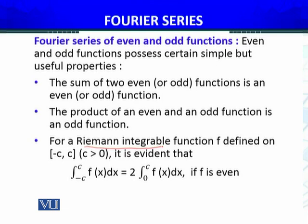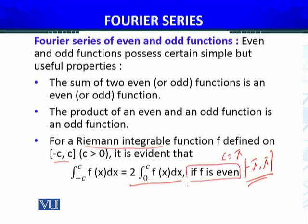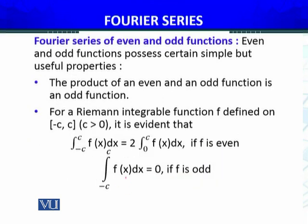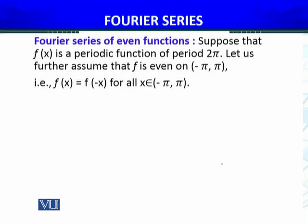For a Riemann integrable function f defined on minus c to c (c greater than zero) — in our Fourier series case, c equals pi, so the interval is minus pi to pi — the integral from minus c to c of f(x) dx equals two times the integral from zero to c of f(x) dx, if f is an even function. And if f is an odd function, then the integral from minus c to c of f(x) dx equals zero. Using these two properties, we will simplify the Fourier series for even and odd functions.